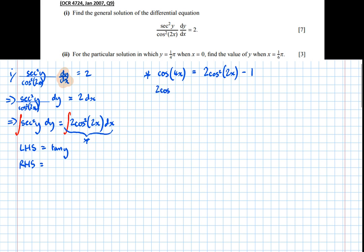And rearranging this, we get 2 cos squared of 2x equals cos of 4x plus 1. And notice that the left hand side was what we originally asked to integrate, this here. And we've turned it into something equivalent that we can integrate. So instead of integrating 2 cos squared of 2x, we'll integrate this here, which is much more helpful.